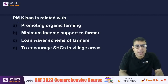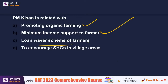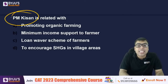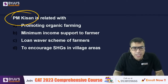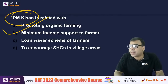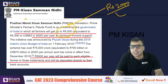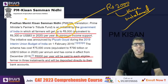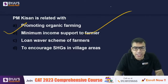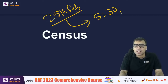PM KISAN is related with what? Options: promoting organic farming, minimum income support to farmers, loan waiver scheme for farmers, or encouraging SHGs in villages. The right answer is B — minimum income support to farmers. Under PM Kisan Samman Nidhi, 6000 rupees per year is provided in three installments of 2000 rupees each. On 25th February at 5:30 PM, there will be a TISSNET analysis session on this channel.